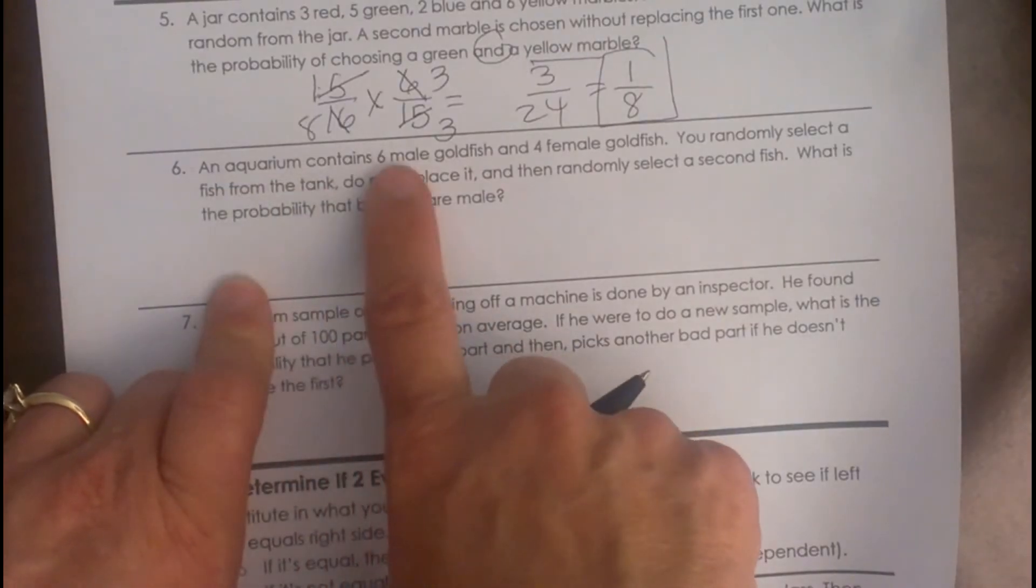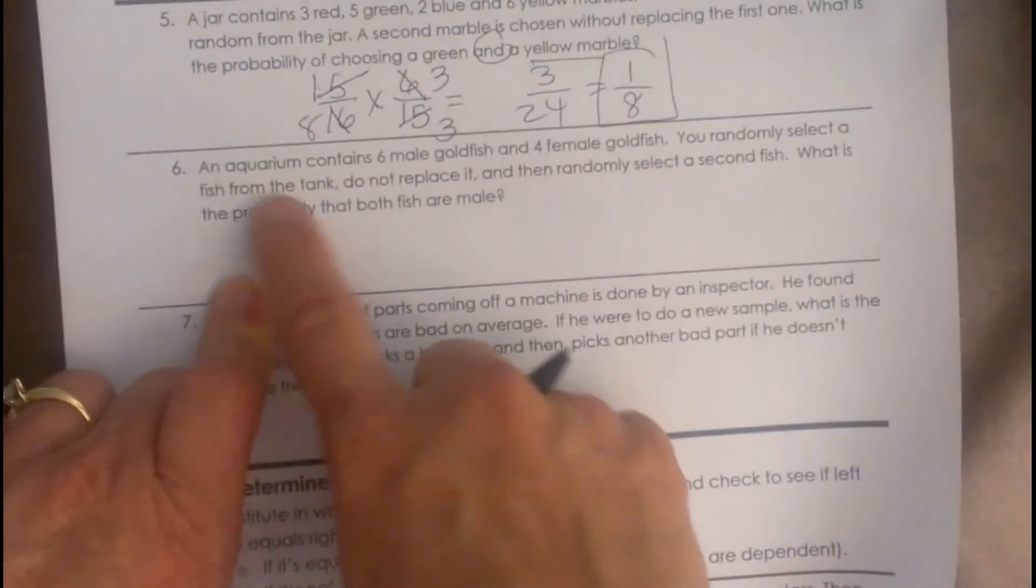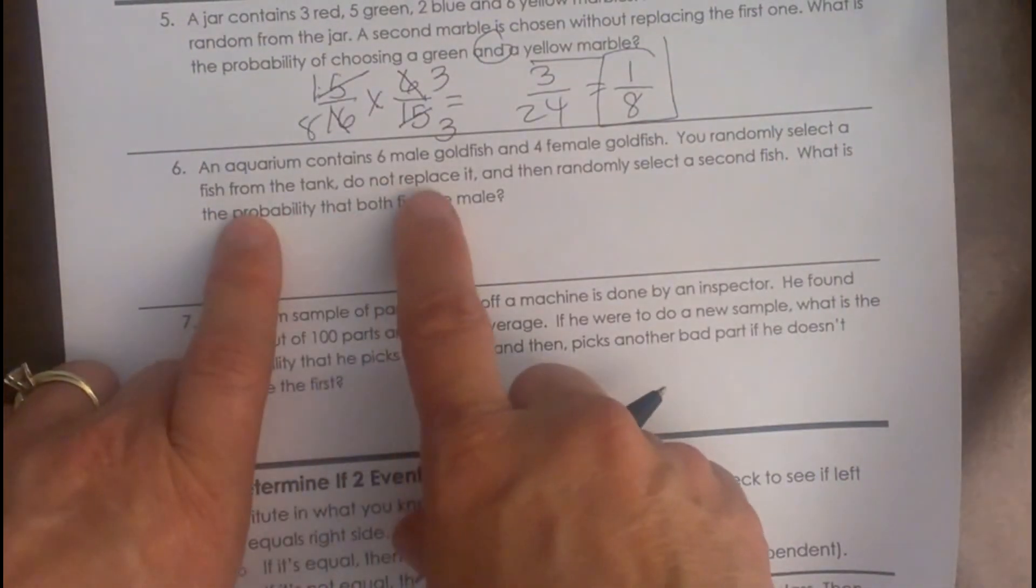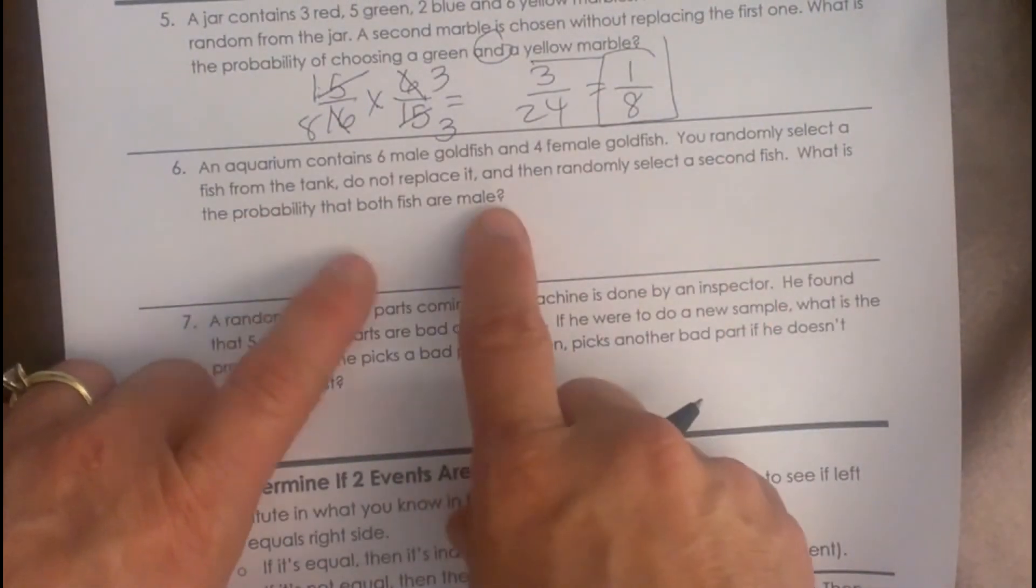An aquarium contains 6 male goldfish and 4 female goldfish. You randomly select a fish from the tank, do not replace it, then randomly select a second fish. What is the probability that both are male?